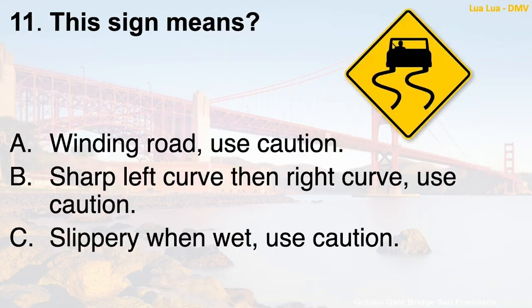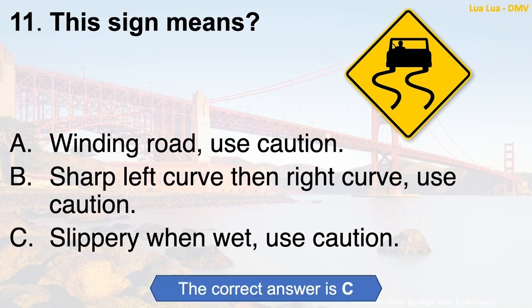Question 11: This sign means — A. Winding road, use caution. B. Sharp left curve then right curve, use caution. C. Slippery when wet, use caution. The correct answer is C: Slippery when wet, use caution.